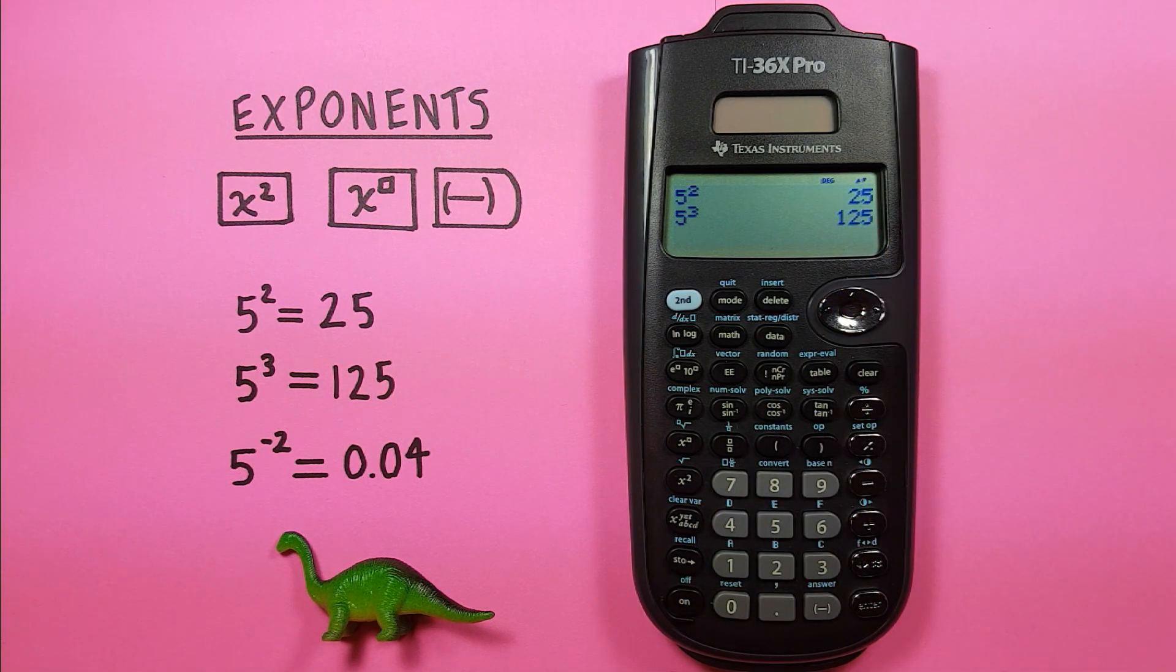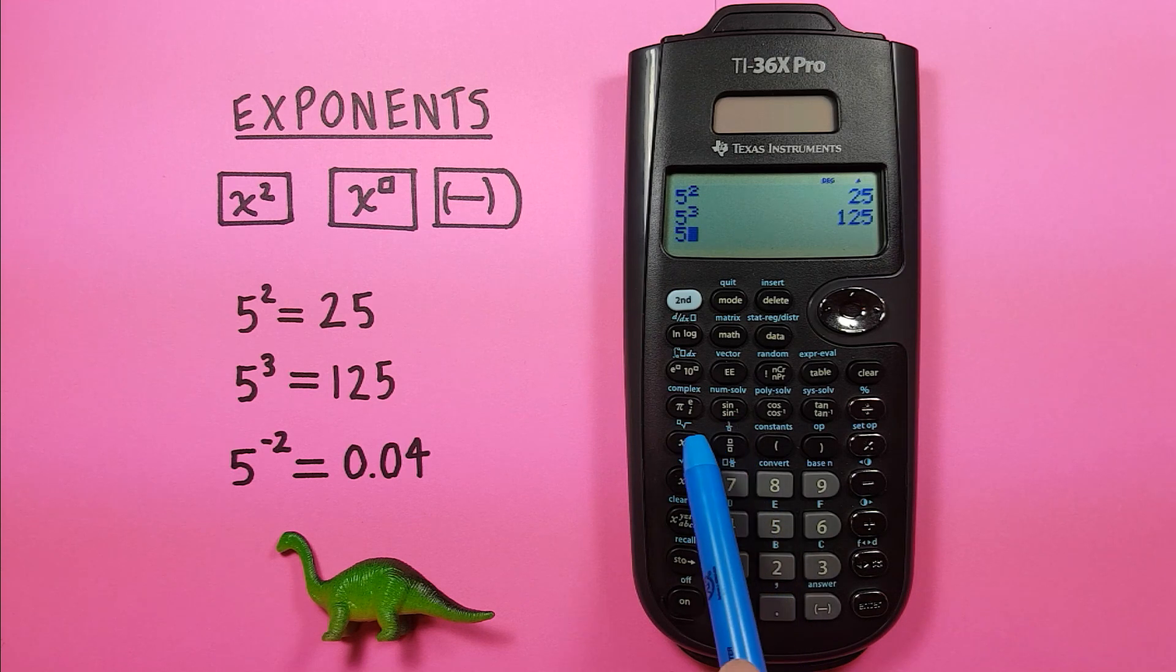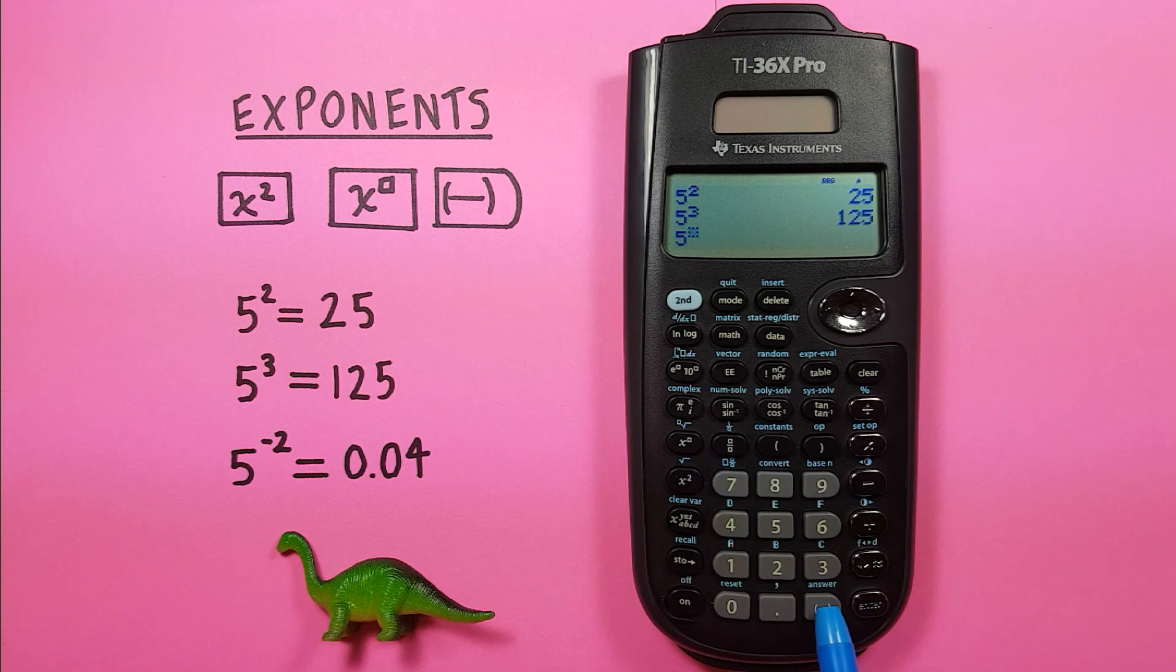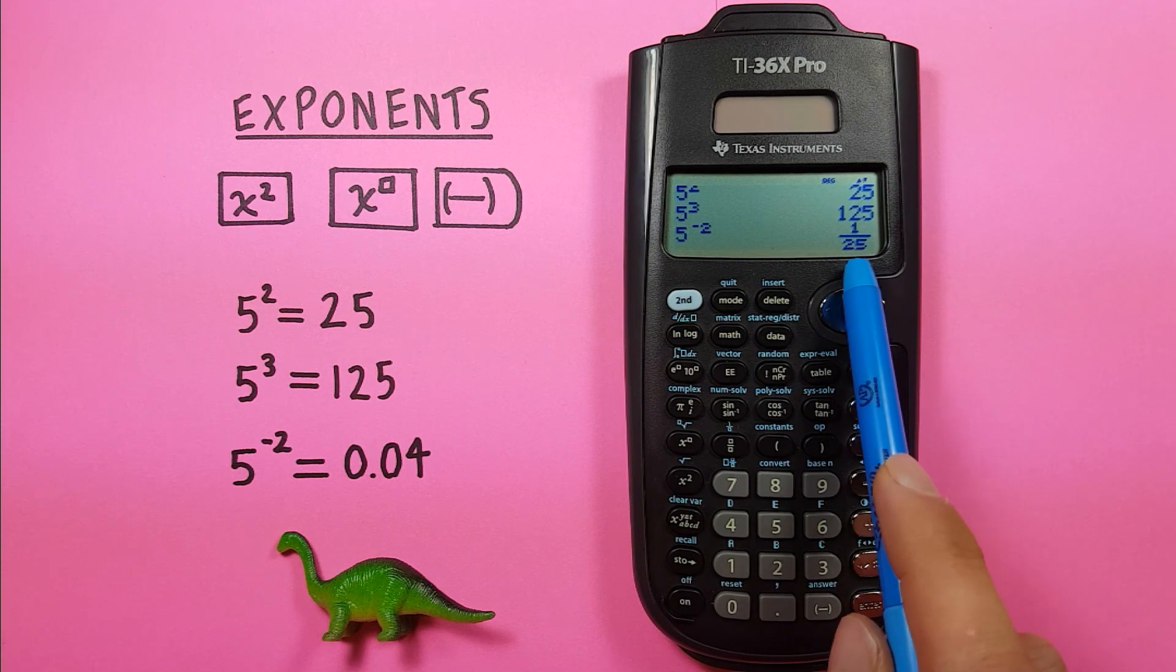We can also use this to solve negative exponents. So let's say we want to find 5 to the power of negative 2. We press 5, the exponent key, and then we can use the negative and then 2. You can see we now have a negative exponent there. Press enter and you can see we get a result of 1 over 25.